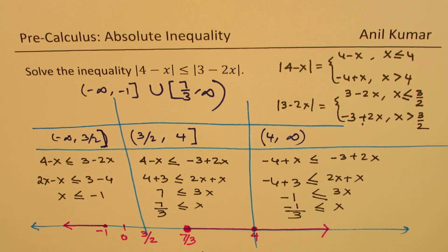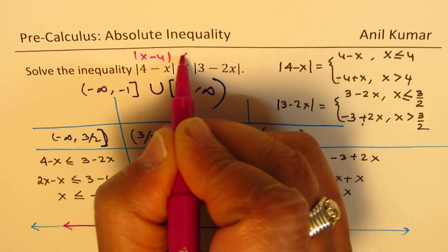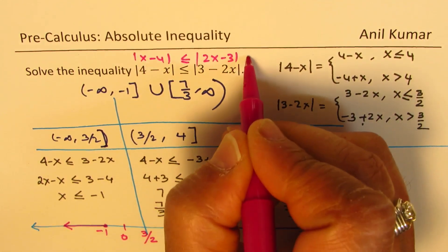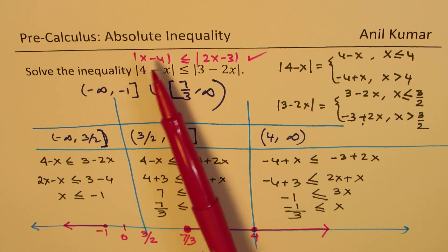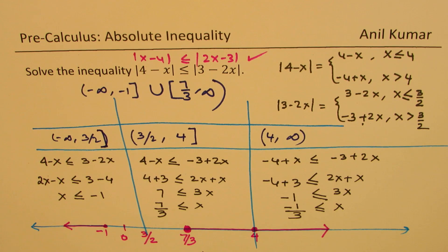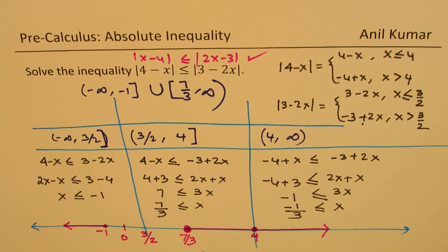A few takeaways: rewriting the inequality as absolute value of x minus 4 less than or equal to absolute value of 2x minus 3 avoids confusion since x is written first. If both sides are positive, Strategy 1 — squaring both sides — is faster and more efficient. Strategy 2, using piecewise functions and solving in intervals, is the general strategy usable anytime. If you have questions, feel free to write your comments. If you like and subscribe to my videos, that would be great. Thanks for your time and all the best.